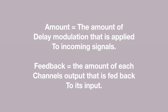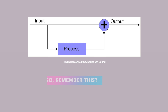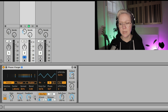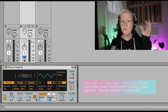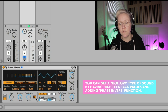The amount is the amount of delay modulation applied to the incoming signal, and this will also affect both LFOs which we'll go through soon. The feedback is the amount of each channel's output that is fed back to its input — remember, we had the one signal split in two, the other one processed, and then combined again. We also have a polarity invert button which inverts the polarity of the signal.